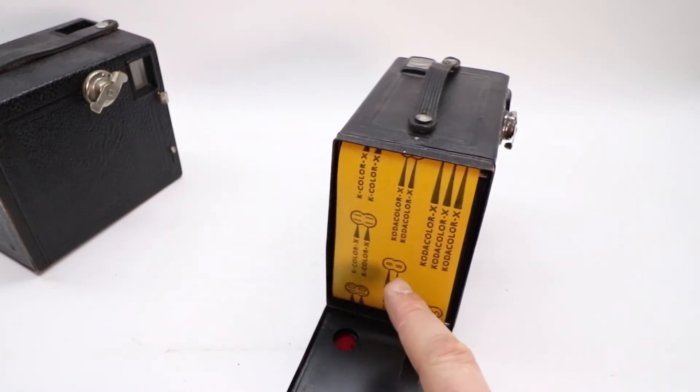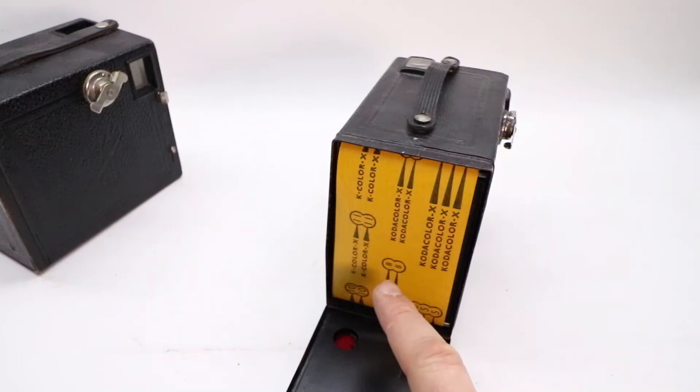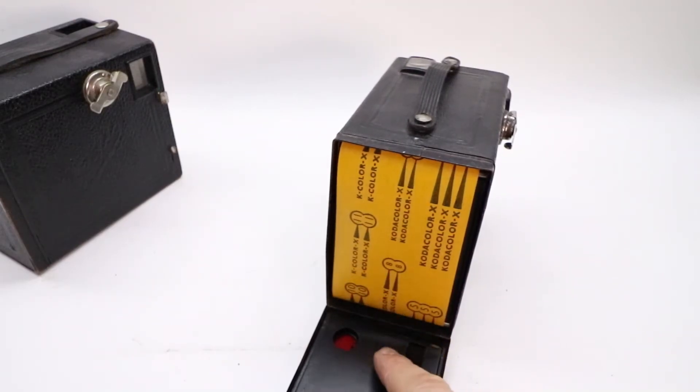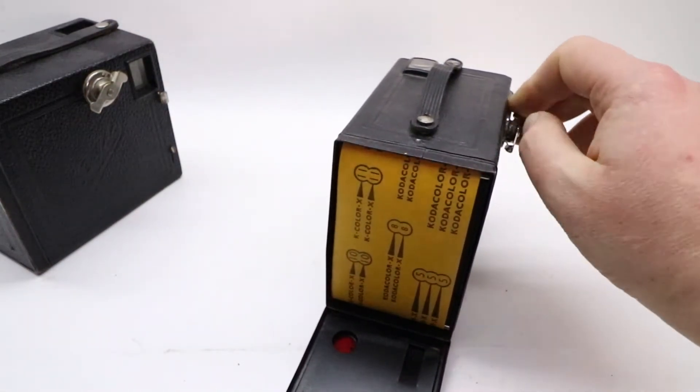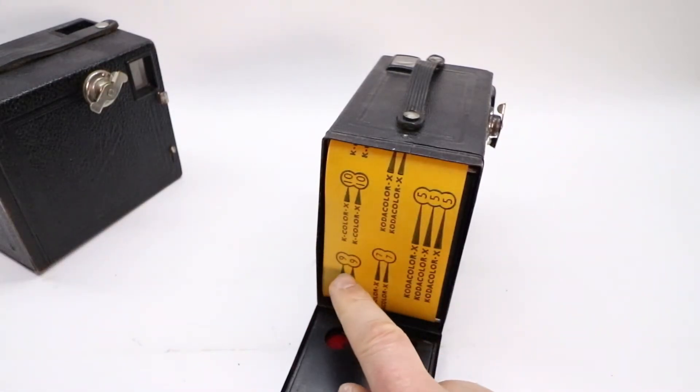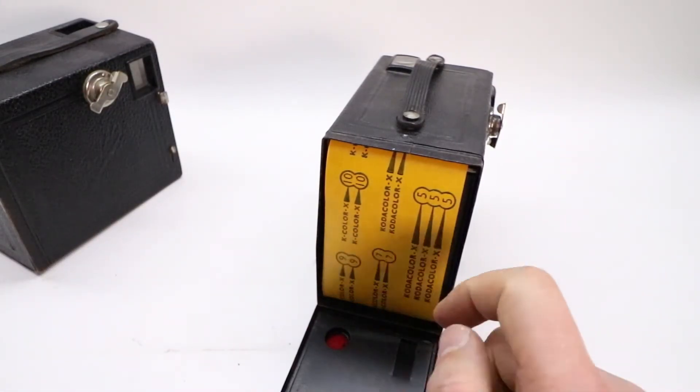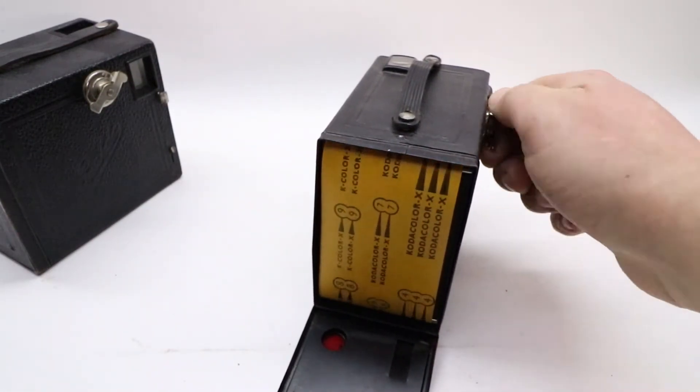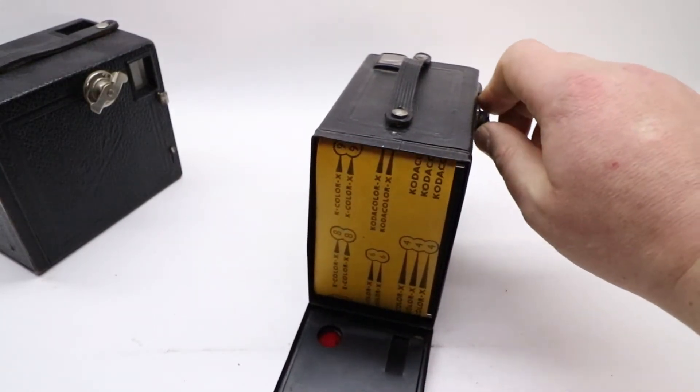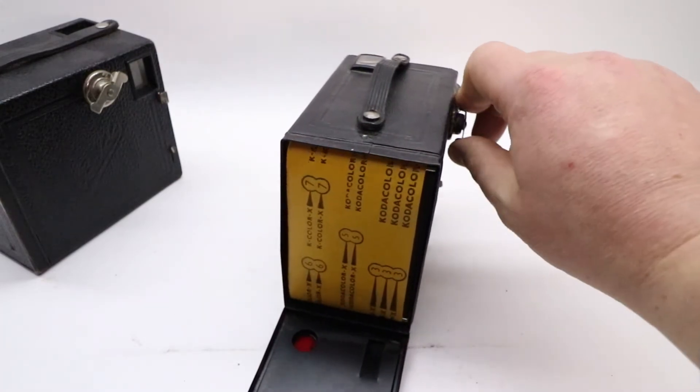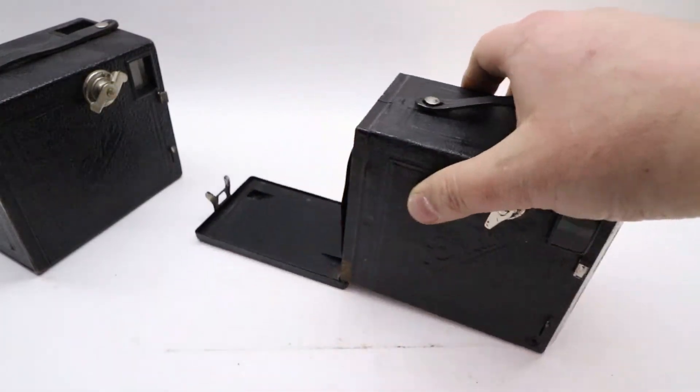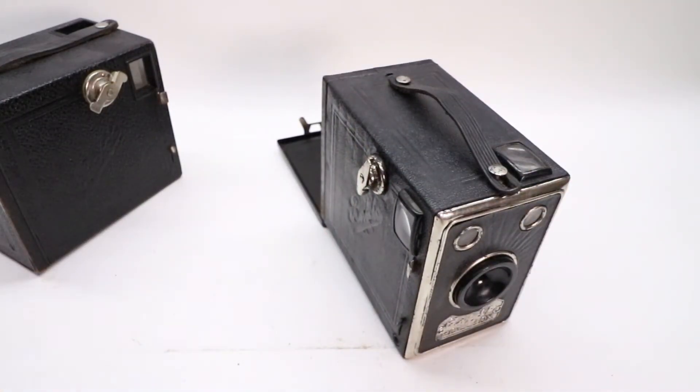But there are also numbers in here. So probably it's for different cameras. Like when it has it here, it has it here, and then you can see how many shots. Probably it's when it's smaller. When it's bigger. So it's nine, seven, five. See? So it depends what size of camera you have.